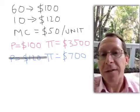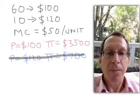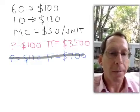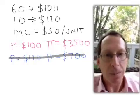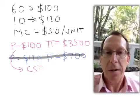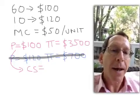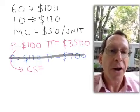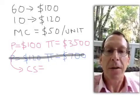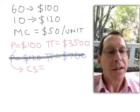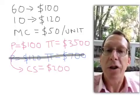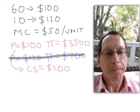It will make $3,500 profit. What about consumer surplus? The consumers who are only willing to pay $100 get no surplus — they're paying exactly their marginal value. But the customers who are willing to pay $120 only have to pay $100, so they get $20 surplus on each unit they buy. There are 10 of them buying 10 units, giving $200 of consumer surplus.